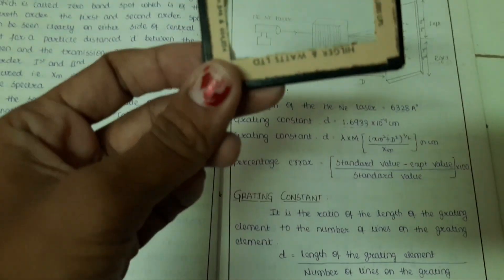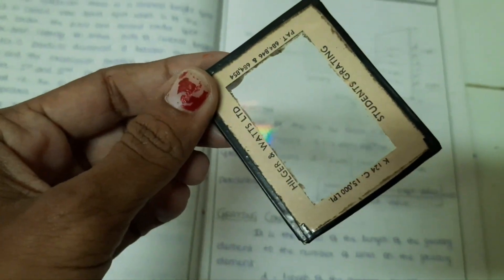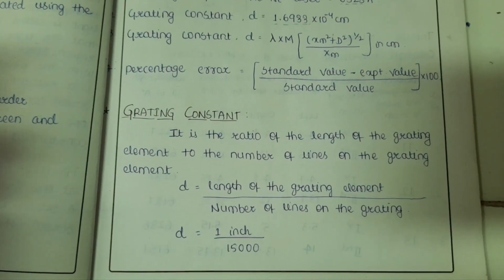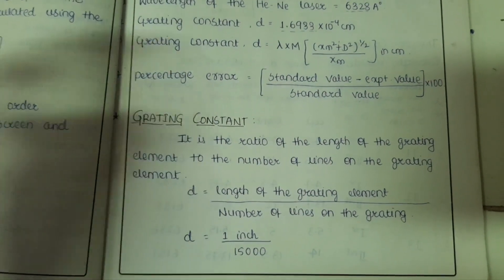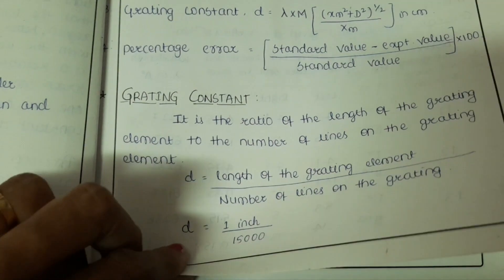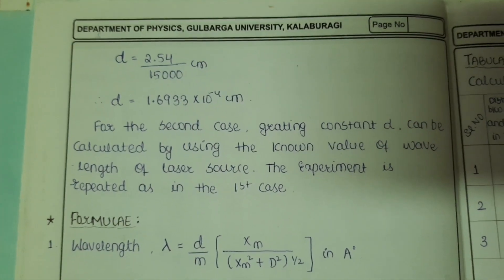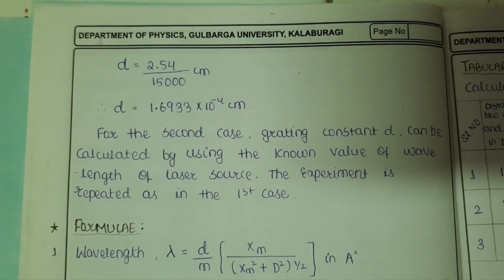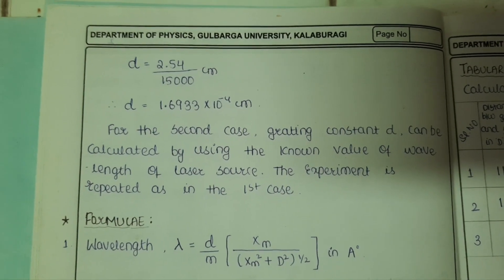To calculate the grating constant, you can see this grating has 15,000 lines, and the length of the grating is one inch. So this is a one-inch grating with 15,000 lines. Putting these values into the formula gives a grating constant of 1.6933 × 10⁻⁴ centimeter.